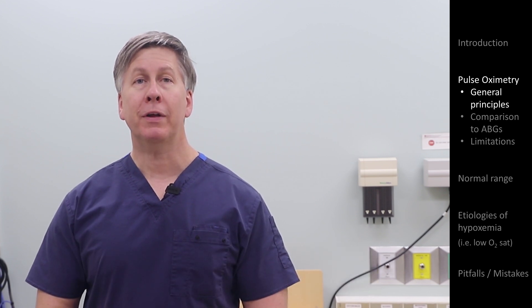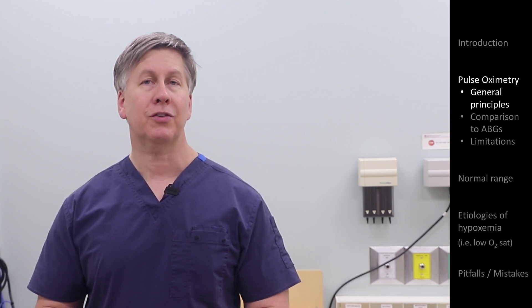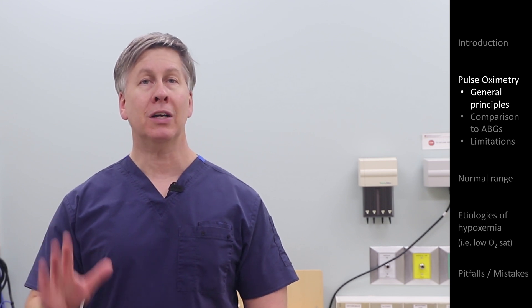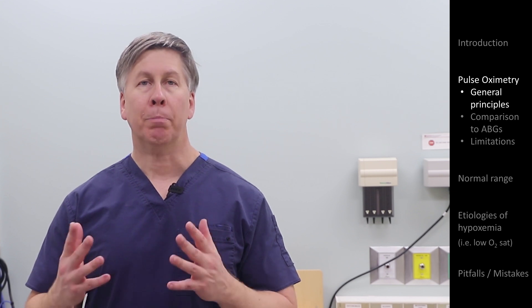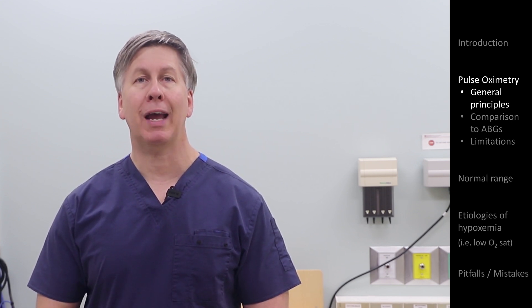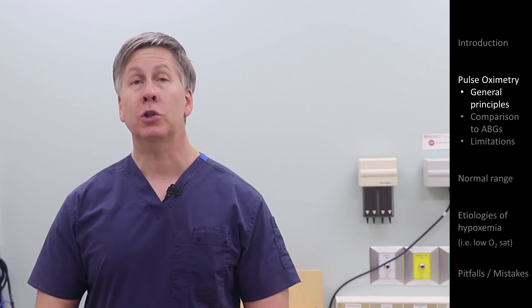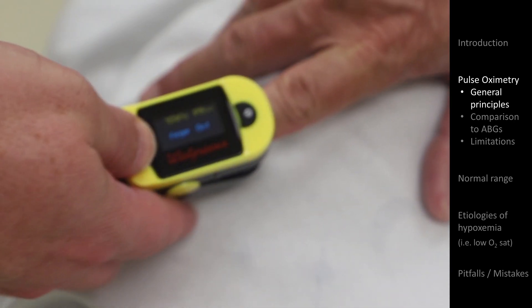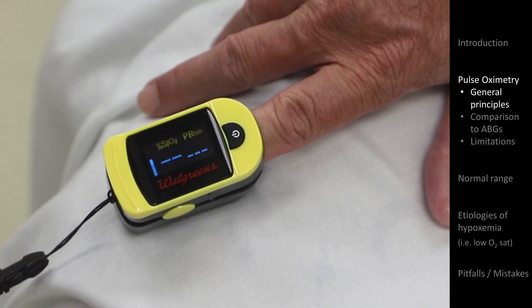There are multiple methods that can be used to determine the O2 sat in a patient. However, within the context of the physical exam, there is just one — it's called pulse oximetry. In pulse oximetry, a probe is placed directly onto the skin, most typically consisting of a small hinge device that fits on the end of a finger, though there are other variations.